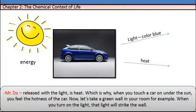Released with the light is heat, which is why when you touch a car under the hot sun, you feel the hotness of the car. Now, let's take a green wall in your room for example. When you turn on the light, that light will strike the wall.